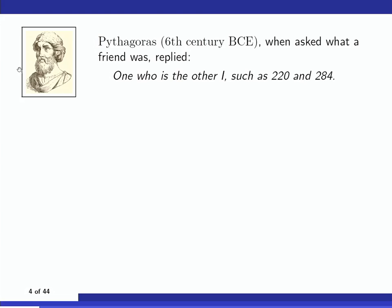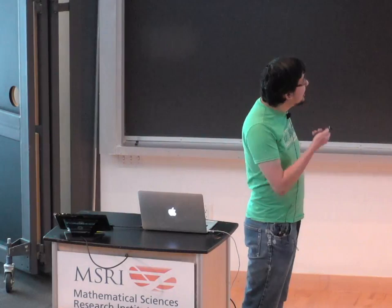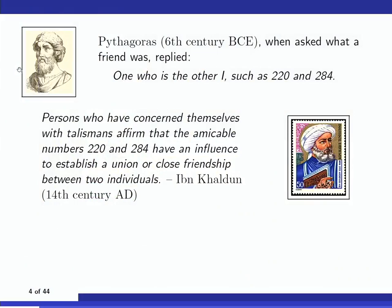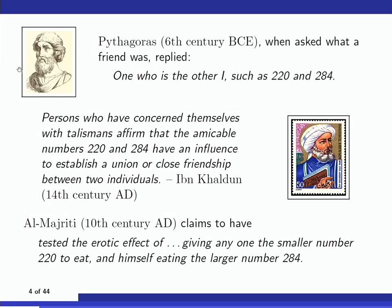Here are some thoughts about 220 and 284. Pythagoras, around the 6th century B.C.E., when asked what a friend was, said: 'A friend is one who is the other I,' and gave 220 and 284 as an example. Ibn Khaldun also wrote about amicable numbers, saying 220 and 284 have an influence to establish a union or close friendship between two individuals — this explains the name 'amicable.' Al-Madridi took this further and claims to have tested the erotic effect of giving someone the smaller number 220 to eat while himself eating the larger number 284.